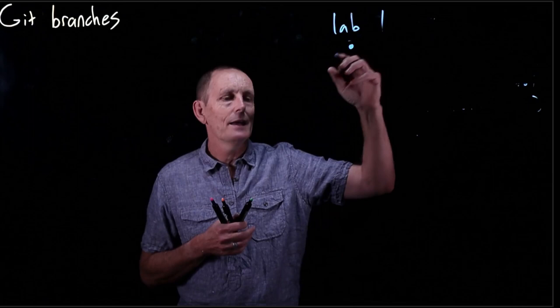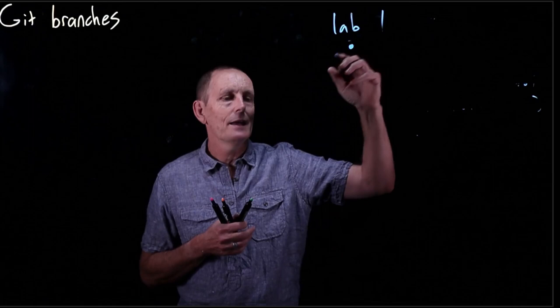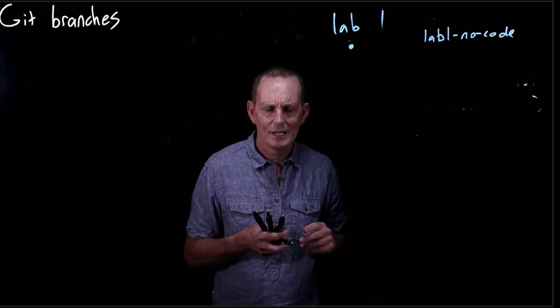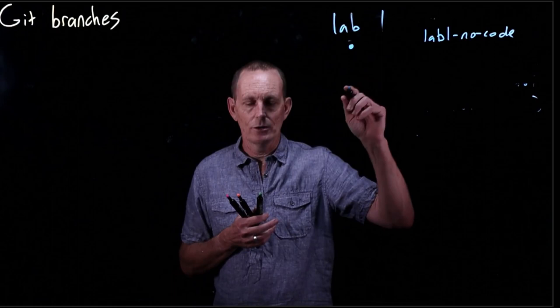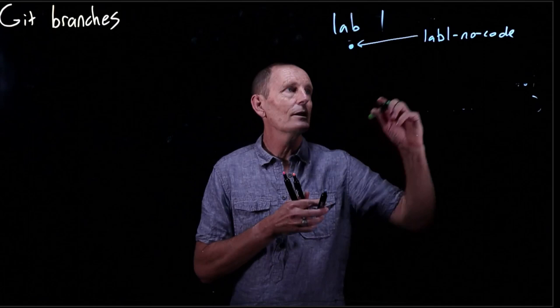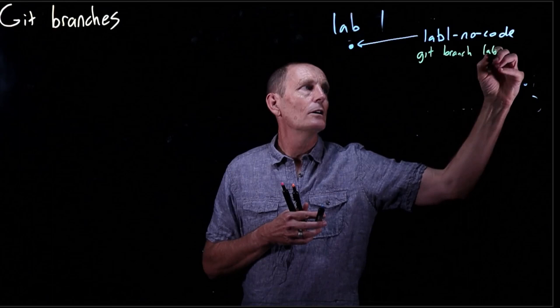So we're going to go ahead and create a branch, lab one. I suggest calling it lab one no code. Lab one no code is not necessarily the best name for it, but it is what it is. So lab one no code is going to be a pointer to this commit. And we're never going to change that branch. So how did we get it? We just did a git branch lab one no code.